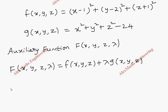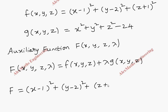Substituting, capital F(x, y, z, λ) = (x−1)² + (y−2)² + (z+1)² + λ(x² + y² + z² − 24).